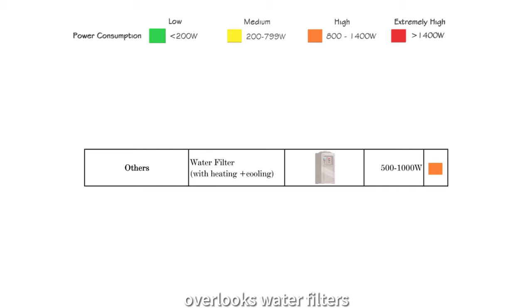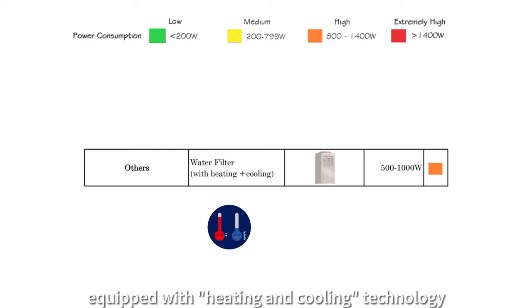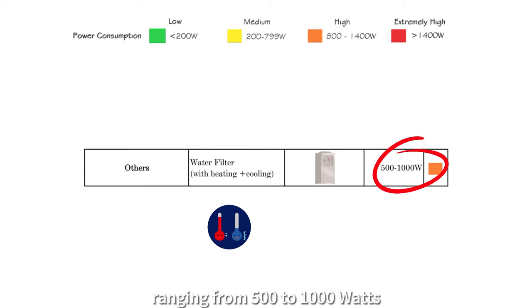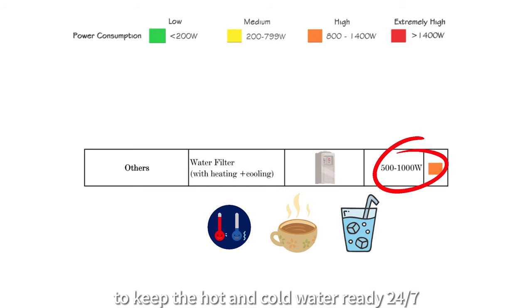Lastly, one often overlooks water filters equipped with heating and cooling technology that can contribute to high energy consumption and electricity bills. These water filters usually use higher power, ranging from 500 to 1000 watts, to keep the hot and cold water ready 24-7.